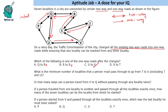What is the minimum number of localities that a person must pass through to go from T to U, excluding T and U? T is here and U is here. A person cannot go from T to V directly, so the person will have to go T to S, then S to R, then R to Q, and from Q the person can directly go to U. So a person has to pass through three localities.